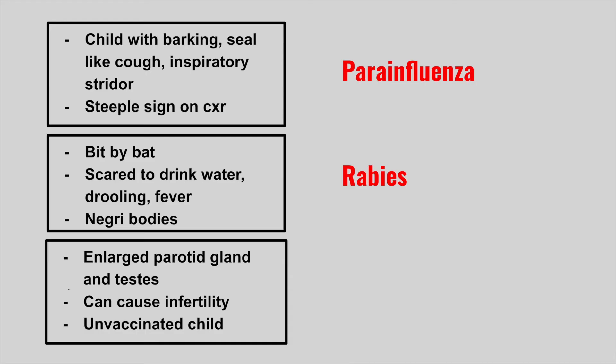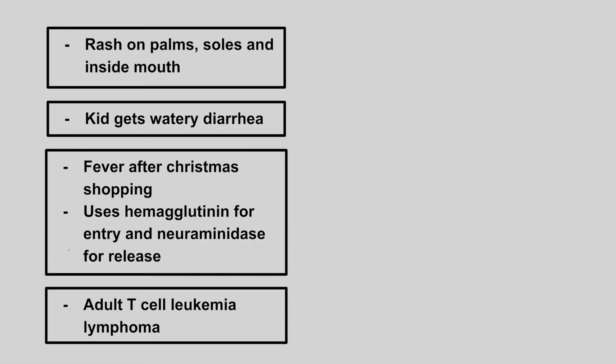The next patient is going to have enlarged parotid glands and testes. It can cause infertility, and they're going to be unvaccinated. This is mumps. The next patient is going to have a rash on the palms, soles, and inside the mouth. This is Coxsackie virus, and this presentation is hand, foot, and mouth disease.